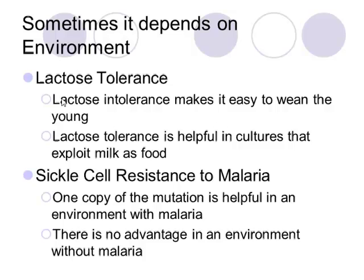Another example of environment-dependent mutation effects is sickle cell resistance. Having two copies of the sickle cell allele is harmful — the person will get sickle cell anemia, experience a sickling effect, and be in huge amounts of pain. But if you have just one copy, sickle cell resistance makes you resistant to malaria. In a country where there isn't much malaria, having one copy of the sickle cell allele isn't very helpful. But in an area like Zimbabwe where there's a lot of malaria, having just one copy is a huge advantage. So whether a trait is helpful depends on the environment.